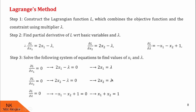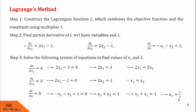From the first two equations, the value of lambda is 2x1 and also 2x2, so both must be equal. Therefore 2x1 = 2x2, which gives x1 = x2. Substituting into x1 + x2 = 1 gives 2x1 = 1, so x1 = 1/2. Then x2 = 1/2, and substituting back gives λ = 1. So we have found the values of x1, x2, and lambda.